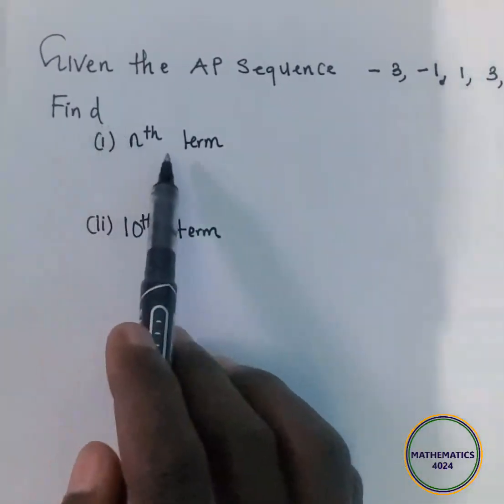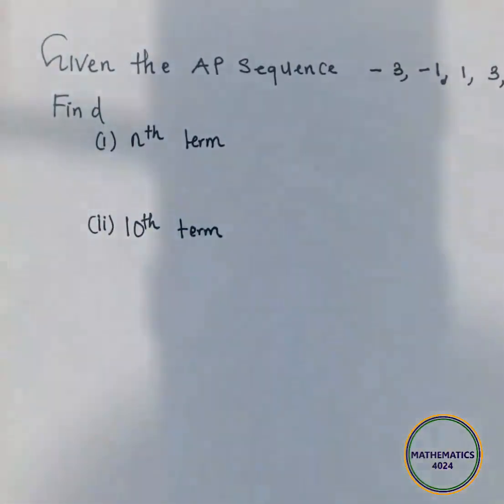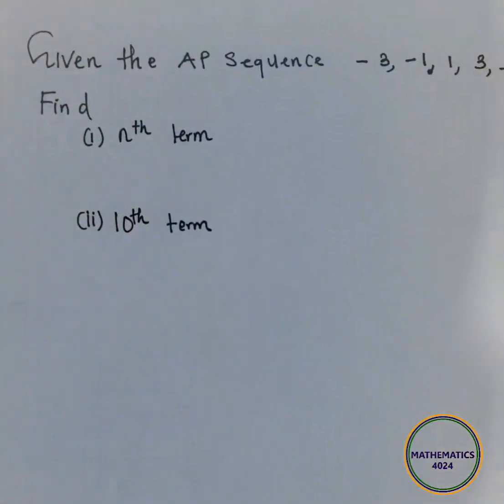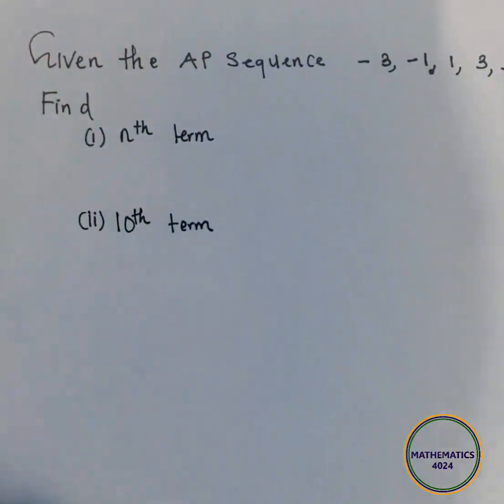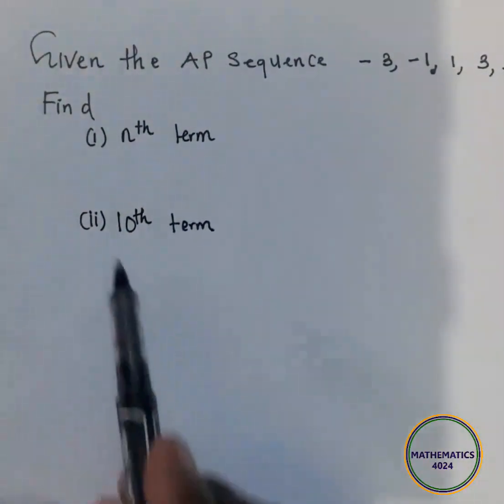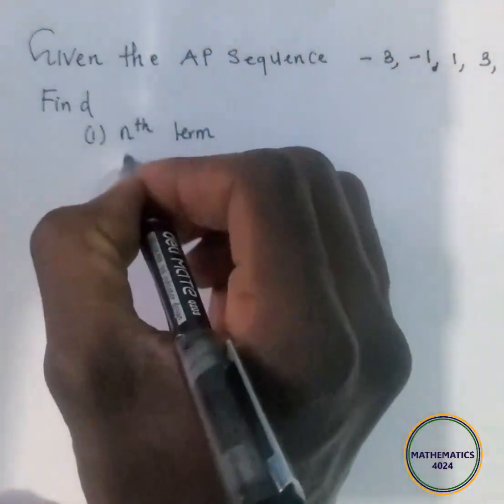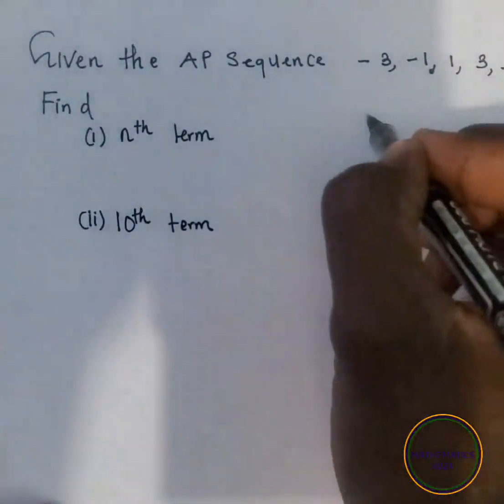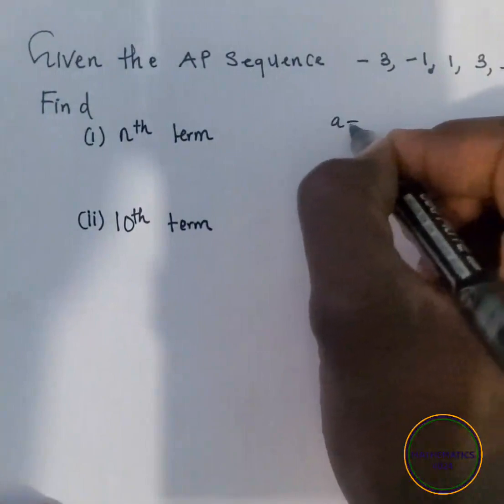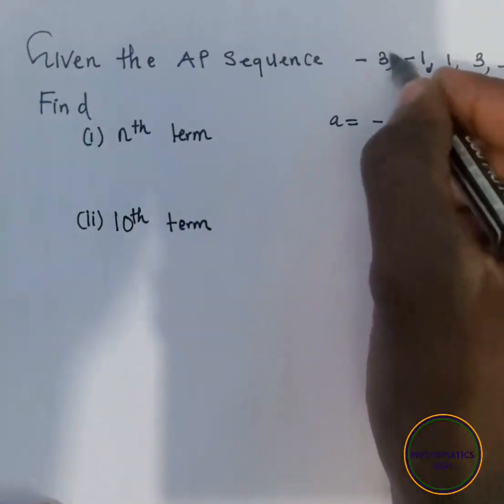It says, find the nth term and find the 10th term. So how do we find the nth term? For us to find the nth term, this is what we do. We first have to find the first term, which is negative 3.